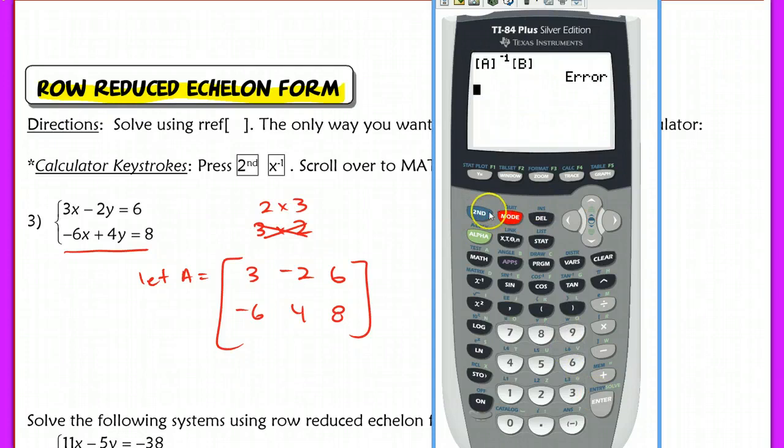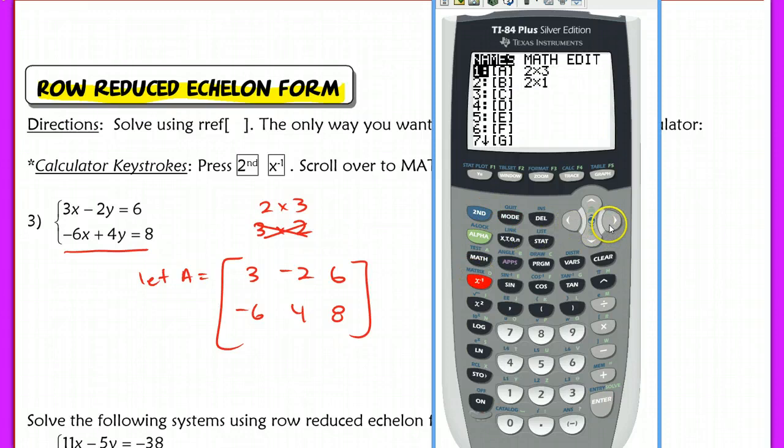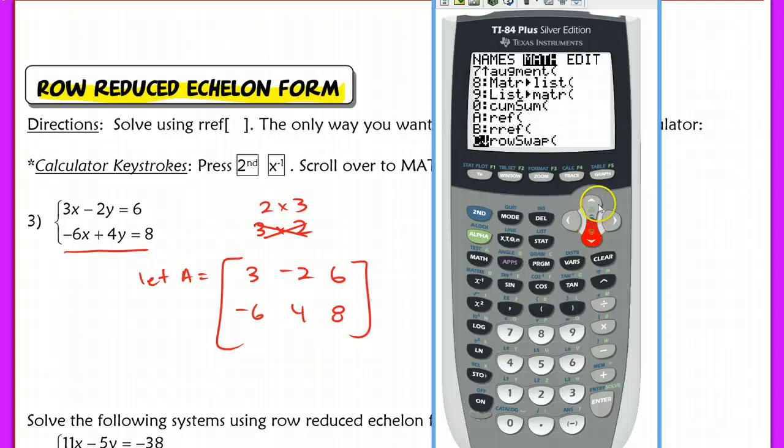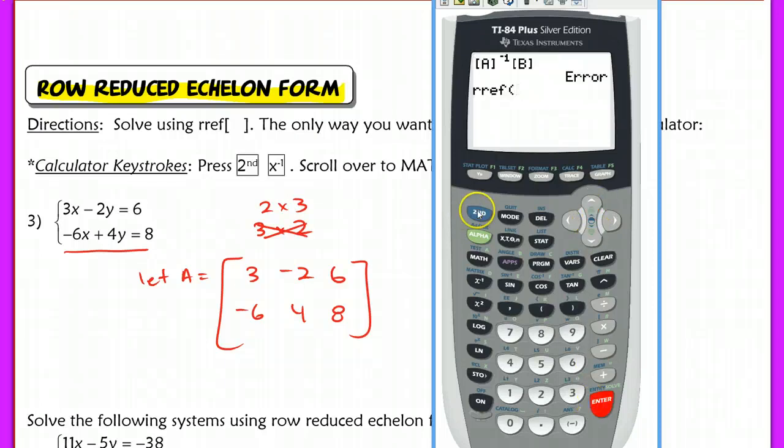I forgot to quit out of there. Let's do that one more time. Second matrix, scroll over to math, scroll down to RREF. Now enter matrix A, hit enter, and that's going to spit out your answer.